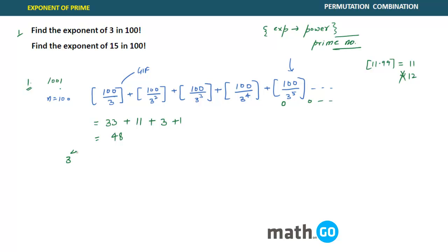48. So that means you will have 3 raised to power 48 in 100 factorial. So 3 will be there 48 times in 100 factorial. That is what is meant by this particular concept. And this is how you have to find answers in this.